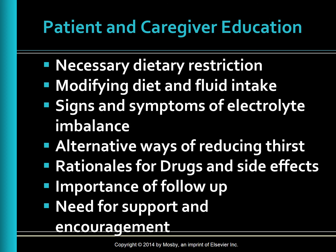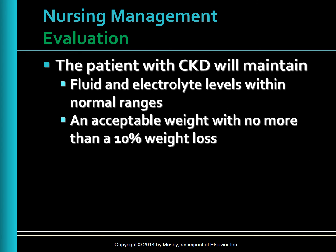Signs and symptoms of electrolyte imbalance, especially high potassium and sodium, are to be discussed. Alternative ways of reducing thirst include sucking on ice cubes, lemon, or hard candy. Drug side effects — such as taking phosphate binders with food and iron supplements between meals — should be reviewed. Patients should follow up with their doctor for weight gain of more than 4 pounds, increasing blood pressure, shortness of breath, edema, increasing fatigue or weakness, and confusion or increasing lethargy. Support groups and discussion about different types of dialysis and kidney transplantation should be offered. Evaluation: the patient with CKD will maintain fluid and electrolyte levels within normal ranges and an acceptable weight with no more than a 10% weight loss.